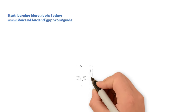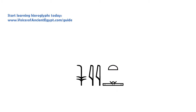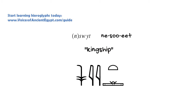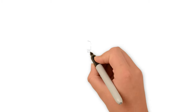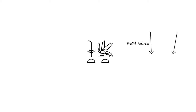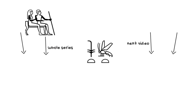This is also used in related words, such as the word for kingship, which is 'nesuit.' And in the next video, we'll see how 'nesut' is used with another word for king to introduce one of the king's main names that appears inside a cartouche, which you've probably seen before. I'll catch you in the next video.